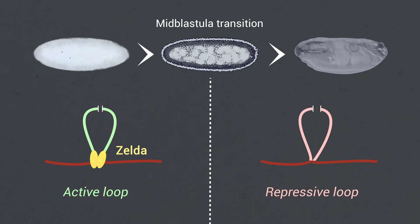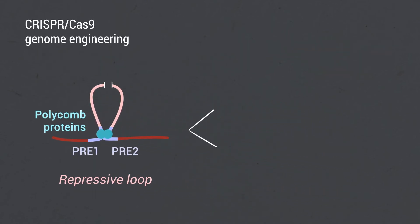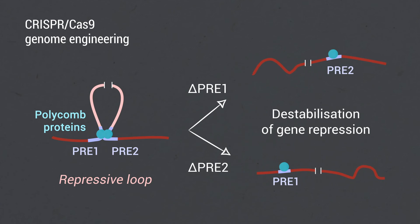Zelda-dependent active loops are formed before the mid-blastular transition between transcribed genes over long distances. Repressive loops within polycomb domains are formed after the mid-blastular transition between PREs by the action of the transcription factor GAGA and polycomb proteins.